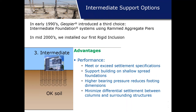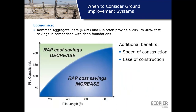Since we're designing each column and building individually, we can toggle the number of piers at each location to minimize differential settlements between columns. We have a lot of control over these systems, and what we've found is that using ground improvement often provides a 20 to 40 percent cost savings — that's why we care about it. We want to get the most economical foundation system to our owners.